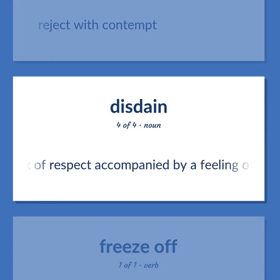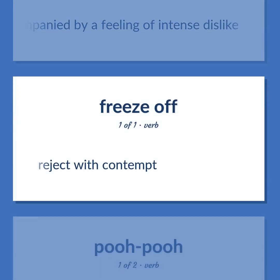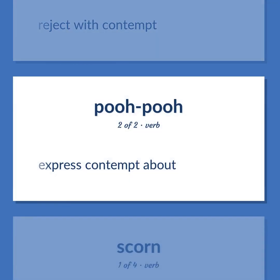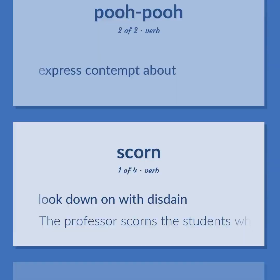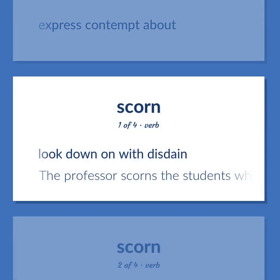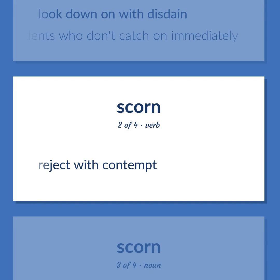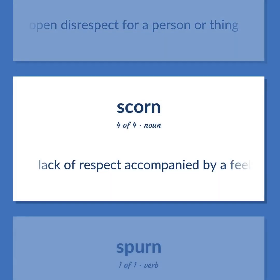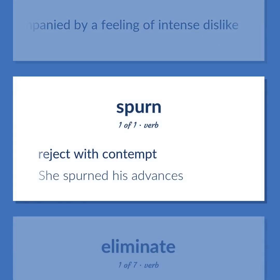Lack of respect accompanied by a feeling of intense dislike. Reject with contempt. Look down on with disdain — the professor scorns the students who don't catch on immediately. Reject with contempt. Open disrespect for a person or thing. Lack of respect accompanied by a feeling of intense dislike. Reject with contempt. She spurned his advances.